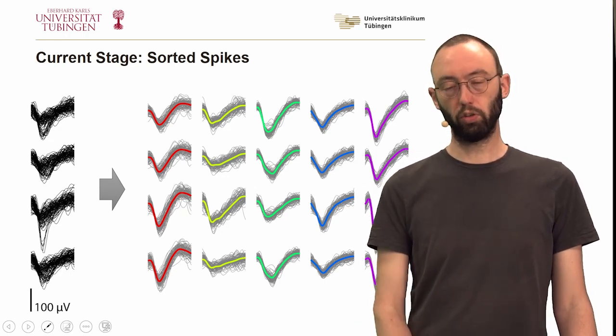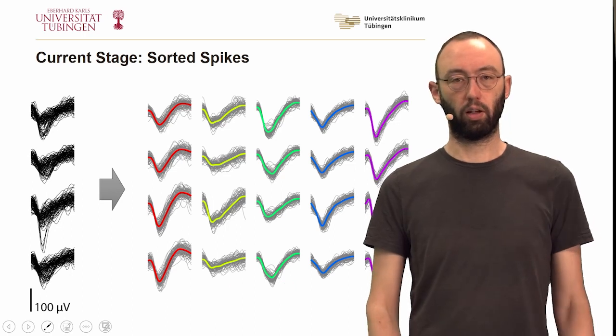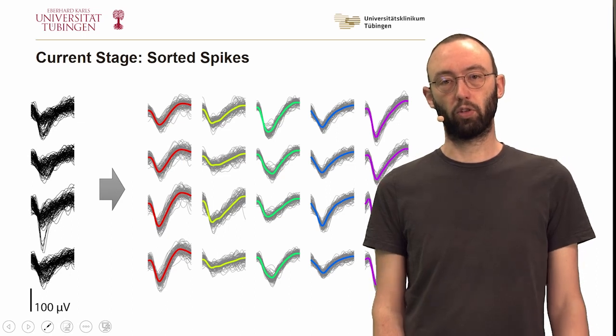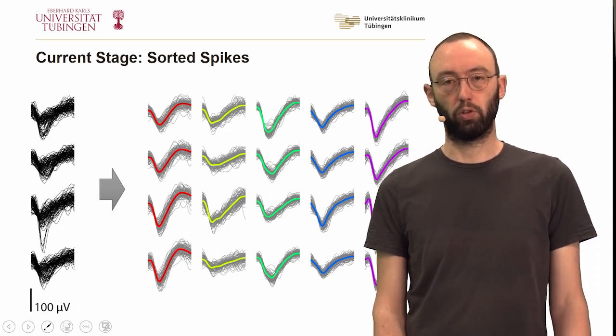Now we would like to know, which of these clusters that are just sorted by waveform similarity actually correspond to signatures of individual neurons?